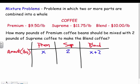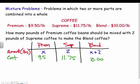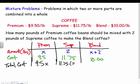We also know the cost per pound: premium costs $9.50, supreme costs $11.75, and the blend costs $10.00. With the amount and cost per pound, I can find the total cost for each. For premium: 9.5 times x. For supreme: 11.75 times 2, since I have 2 pounds. For the blend: $10 per pound times the total amount.